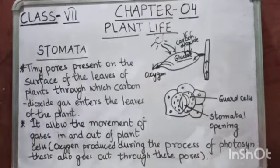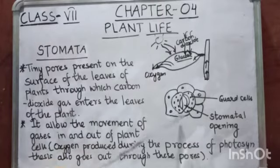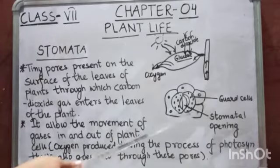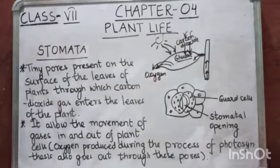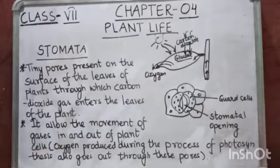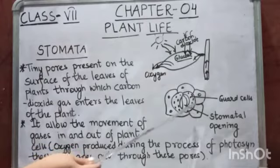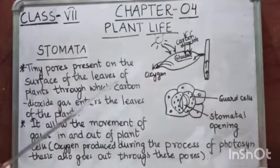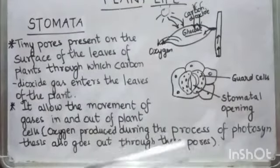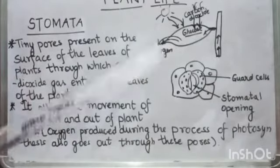Now let's see the structure of stomata. Stomata consist of two guard cells. As you can see here, these are the guard cells and this is the stomata opening. Each stomata pore is surrounded by these guard cells, and the opening and closing of stomata pores is controlled by these guard cells. The guard cells contain a large number of chloroplasts, and the function of chloroplasts is to trap sun's energy or sunlight.